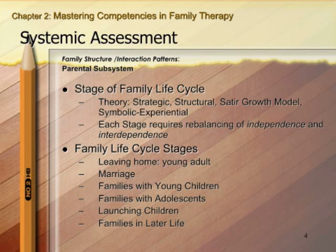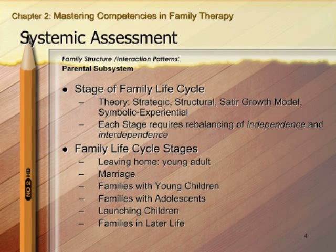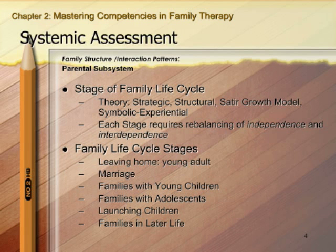Another early thing to assess when looking at family structure is the stage of the family life cycle. Theories such as strategic, structural, Satir growth model, and symbolic experiential use the stage of family life to help conceptualize what's going on in the system. Generally, each stage is seen as needing a rebalancing of both independence and interdependence — as kids move from infancy through adolescence and into adulthood, there is increasingly more independence.